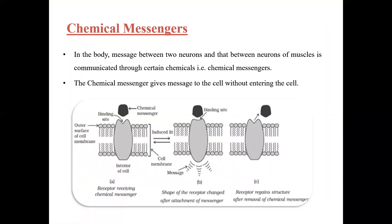Chemical messengers are present in the body. The message between two neurons, and between neurons and muscles, is communicated through chemicals known as chemical messengers. If there are neurons in the body, messages are transferred through neurons via these chemical messengers.